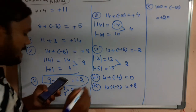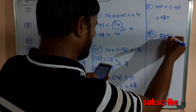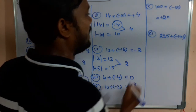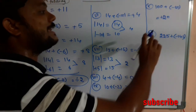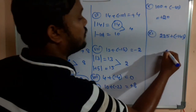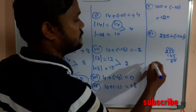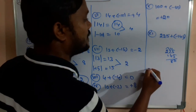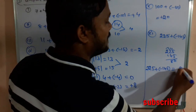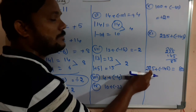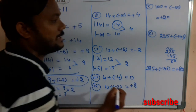The eleventh and last question is 225 + (-145). These are unlike integers, so take the difference: 225 - 145 = 80. The greater number is 225, which has a positive sign, so the answer is +80. This is how we solve all the problems in the second bit without using the number line.